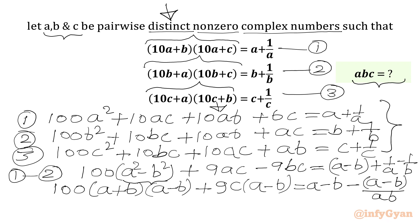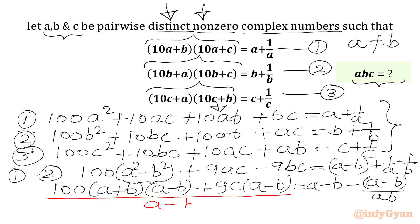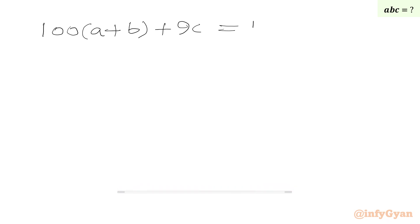Since A, B and C are distinct nonzero numbers, A minus B cannot be zero, so we can divide both sides by A minus B. Cancelling A minus B from both sides, we get 100(A plus B) plus 9C equal to 1 minus 1 over AB. This is our equation number 4.